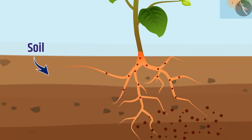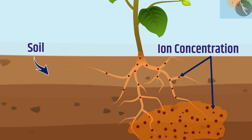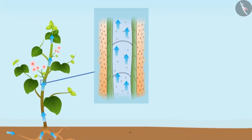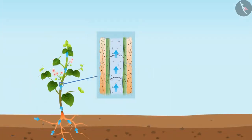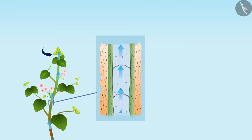Root cells actively absorb ions from the soil, creating a difference in ion concentration between roots and soil. To remove this difference, water enters the roots from the soil and moves into the xylem. The steady movement of water creates a column pushed upward by high pressure developed by root cells, called root pressure.